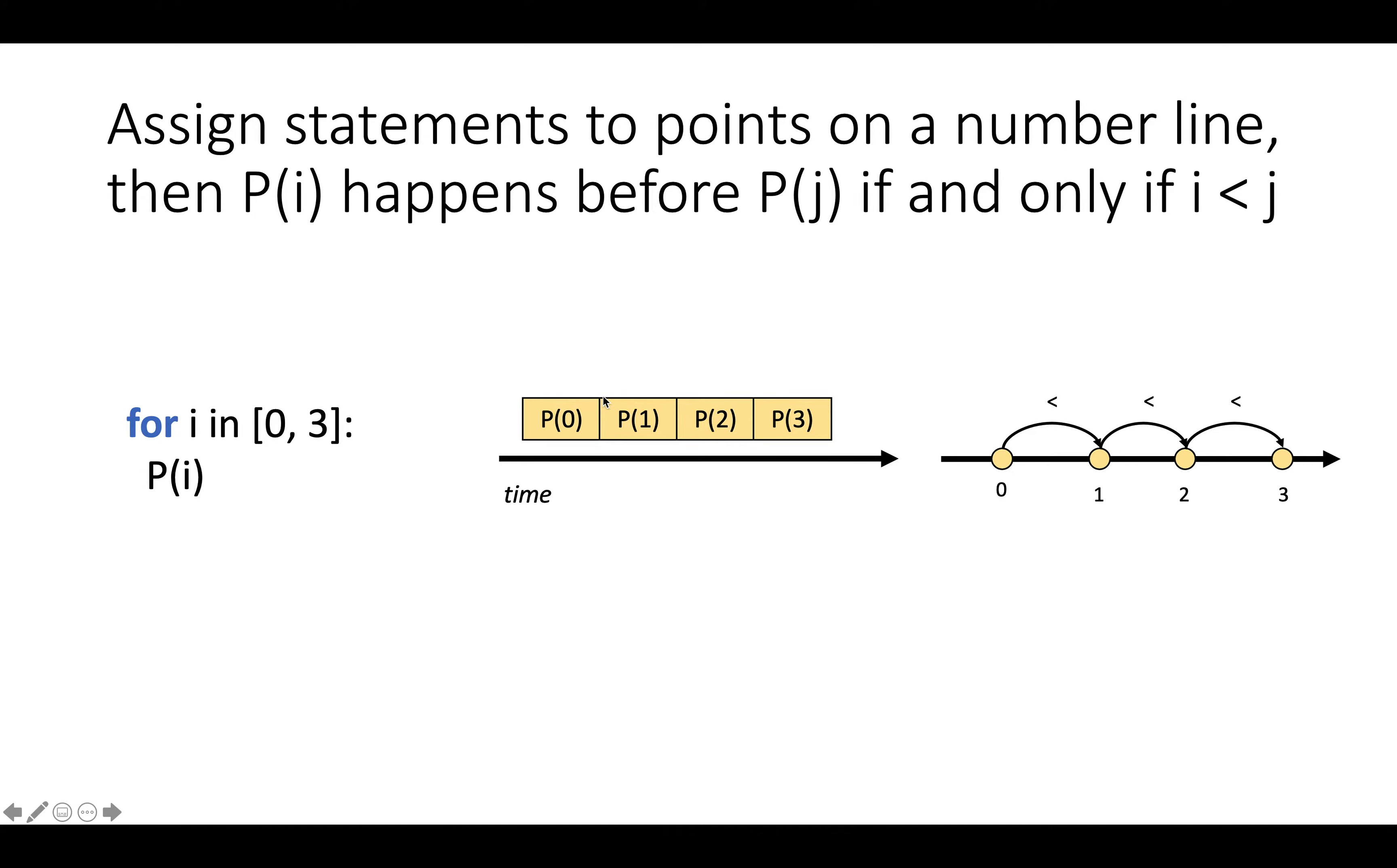And if we think of each of these instances of statements as points on a number line, then statement 0 happens before statement 1, statement 1 before statement 2, statement 2 before statement 3, and good old-fashioned comparison of numbers on the number line can be used to represent these statements. So basically a single integer can represent each instance of a statement, and comparison of integers using less than can represent the order on statements.